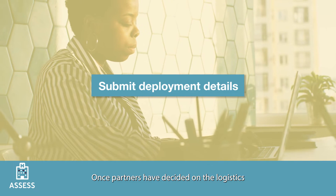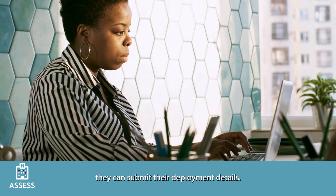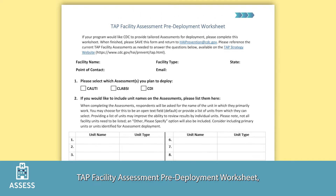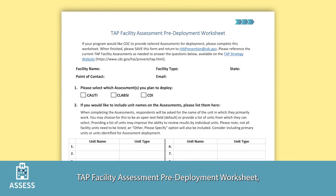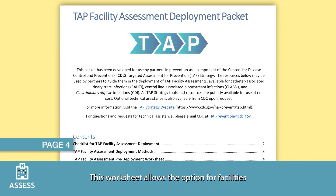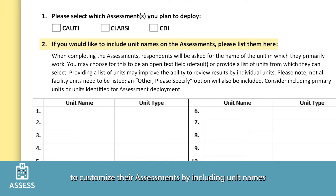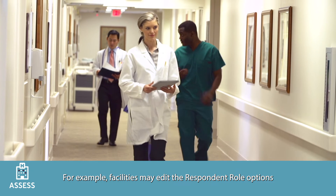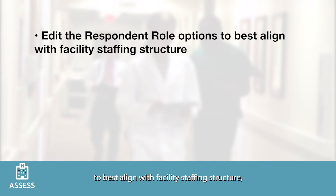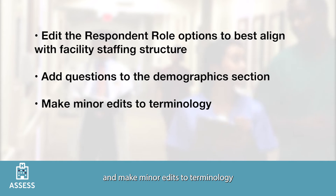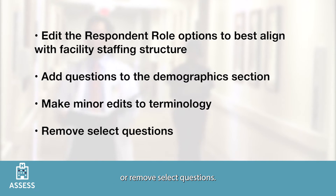Once partners have decided on the logistics, they can submit their deployment details. If you would like CDC to provide tailored assessments for deployment, please complete the questions in the TAP Facility Assessment Pre-Deployment Worksheet, available on page 4 of the TAP Facility Assessment Deployment Packet. This worksheet allows facilities to customize their assessments by including unit names, specifying additional edits to improve staff understanding, editing respondent role options, adding questions to the demographics section, and making minor edits to terminology or removing select questions.